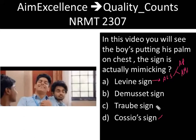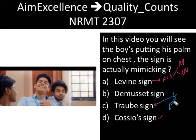The Drop sign is actually an auscultatory finding, seen in cases of severe aortic regurgitation. It is also known as the pistol shot sign. De Musset sign, on the other hand, is head nodding.